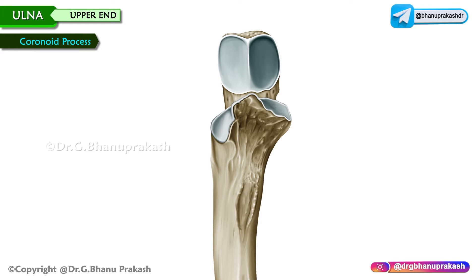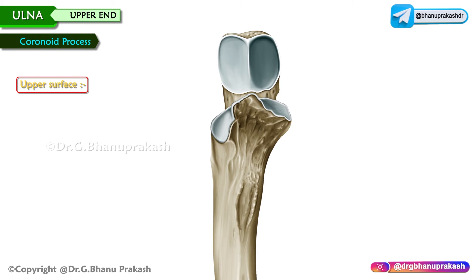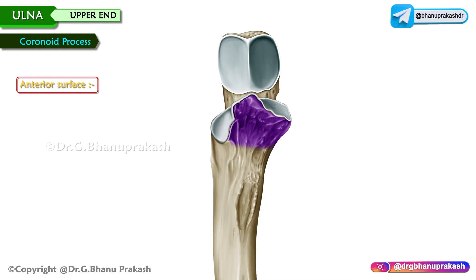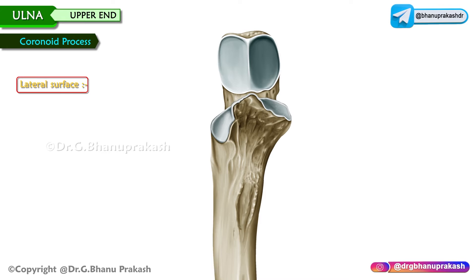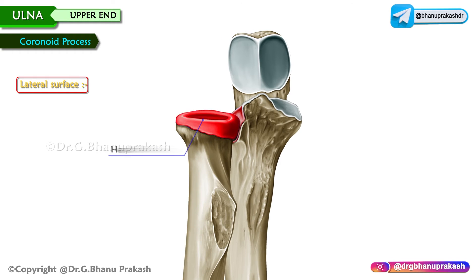Coronoid process. It is a projection just below the olecranon process, and has four surfaces and two borders. The upper surface forms the lower part of the trochlear notch. The anterior surface is triangular in shape; the ulnar tuberosity is a rough projection on its upper part. The lateral surface contains the radial notch, a flattened area for articulation with the head of the radius.